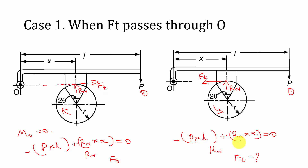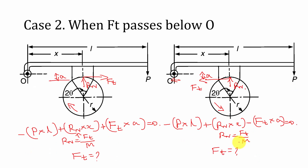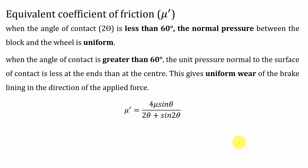With these three cases and both directions of rotation, you can solve any problem on the single shoe brake — just understand the concept. Apart from that, there is one more concept: the equivalent coefficient of friction. When the angle of contact 2θ is less than 60°, normal pressure is uniform. If 2θ is greater than 60°, pressure is not uniform and wear is uniform, so we calculate the equivalent coefficient of friction: μ' = 4μ sin θ / (2θ + sin 2θ), where θ is in radians.